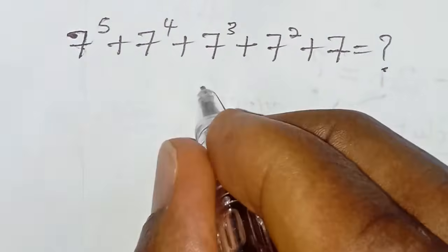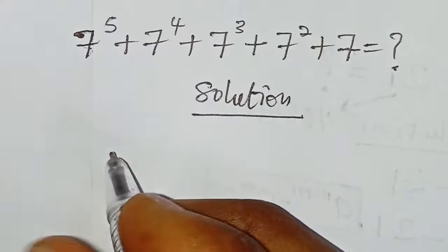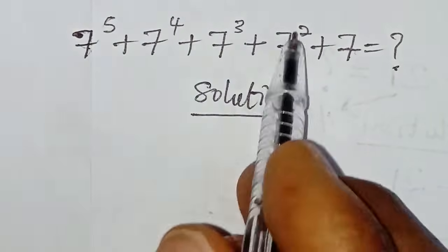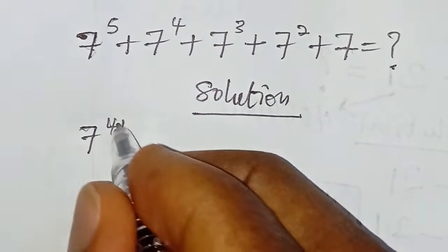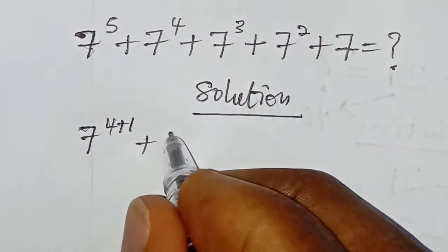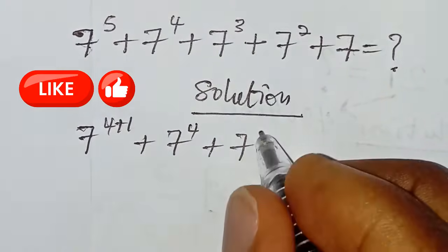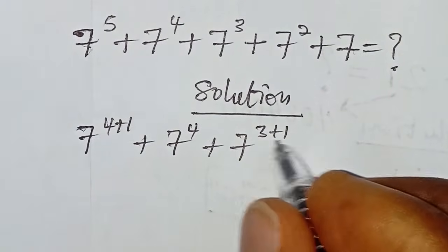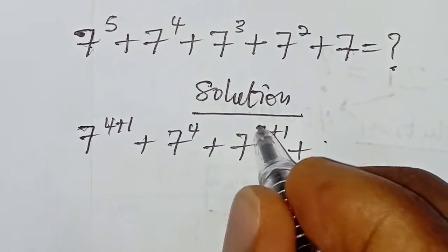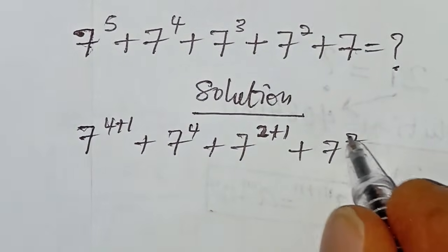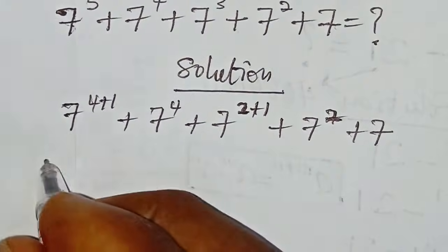The first step is to rewrite each term by splitting the exponents using addition. So we rewrite seven to the power of five as seven to the power of four plus one, seven to the power of four stays, seven to the power of three as seven to the power of three plus one, seven squared as seven to the power of two plus one, plus seven.